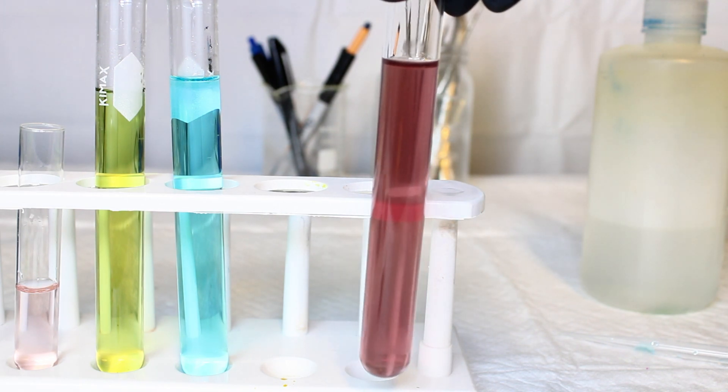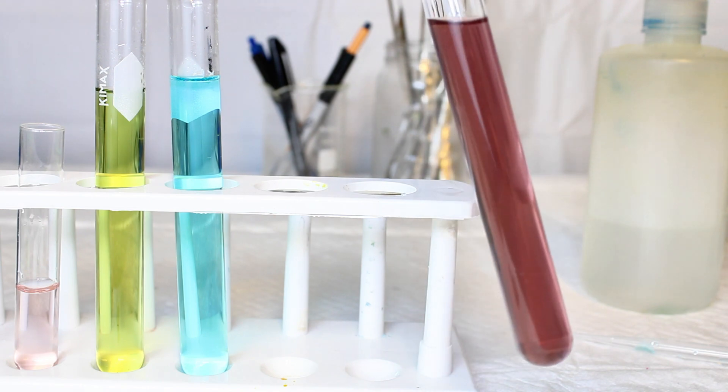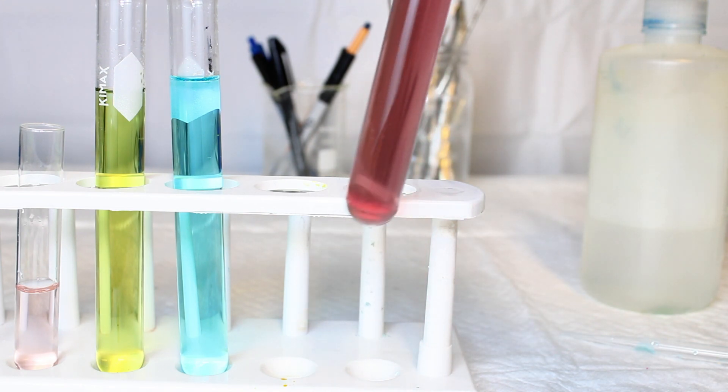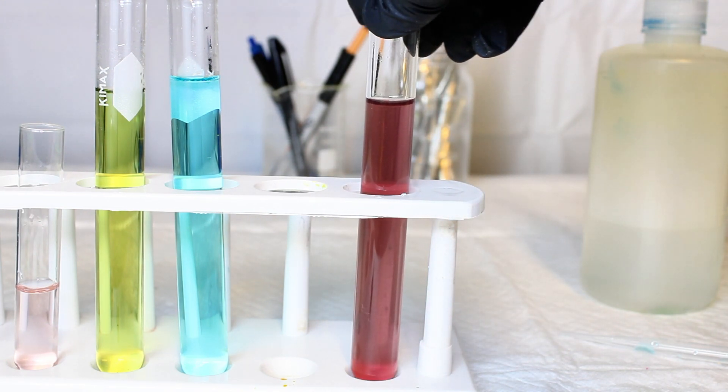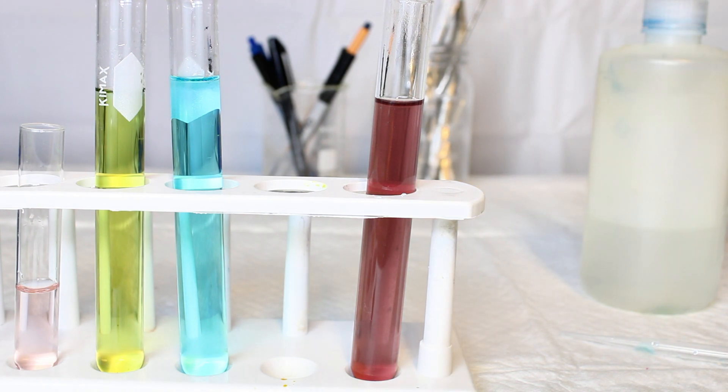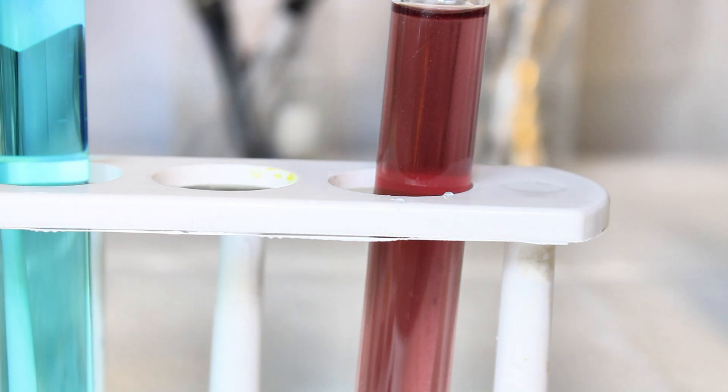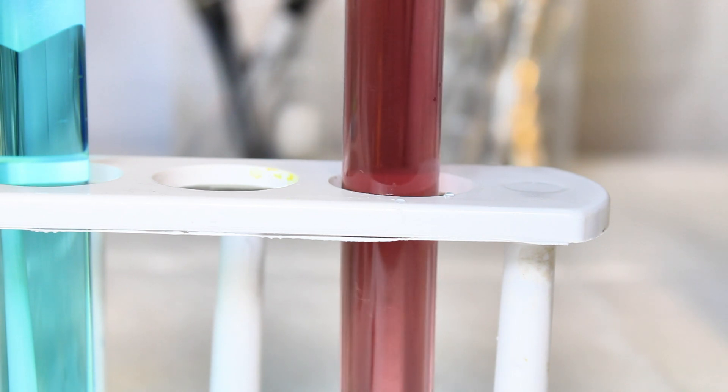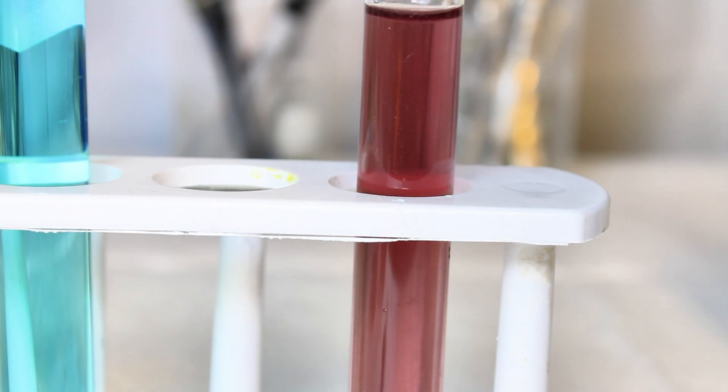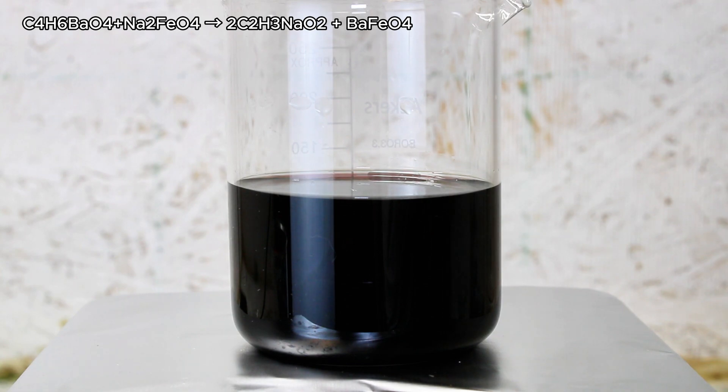I spent some time experimenting on this sodium ferrate because it's not really a compound I've ever heard of or encountered until I started this project. I really wanted to try precipitating this as a stable salt, and eventually I figured out that if I added a solution of barium acetate, it would be precipitated as barium ferrate.